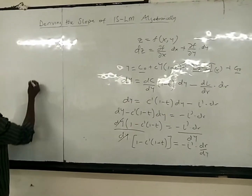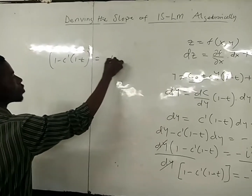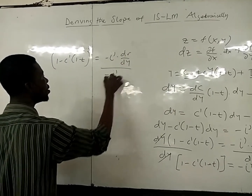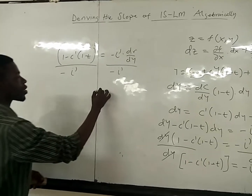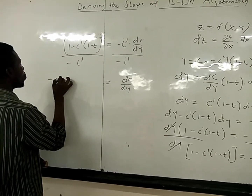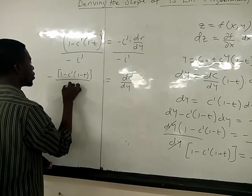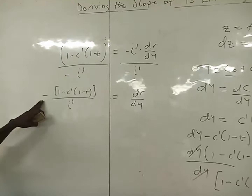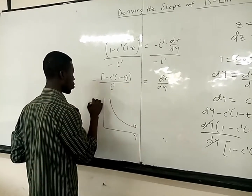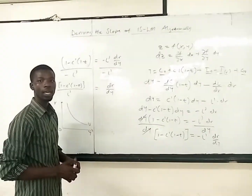So we can get our dr/dy. Dividing through by I_r, we get: dr/dY = −[1 − cy(1 − t)] / I_r. The negative sign here shows the negative slope of the IS curve in output/income versus the interest rate. This is how we algebraically prove the slope of the IS curve.